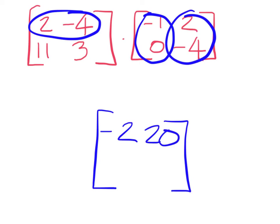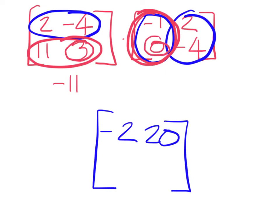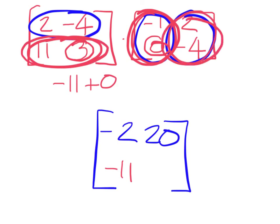Now we're going to move down to this row and go to this column. 11 times negative 1 is negative 11. But you have 3 and 0. So it's still negative 11. Still with this row, but now with this column, 11 times 2 is 22. And 3 times a negative 4 is negative 12. So you'll get a 10.